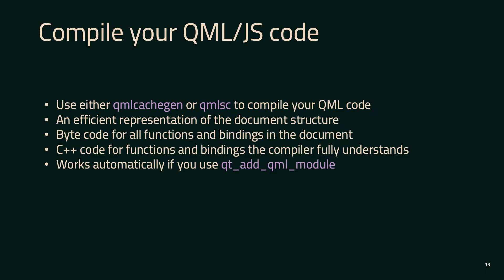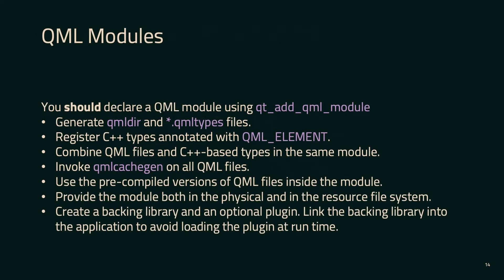The script compiler has more advanced functionality, but QML Cache Gen also does all of these things. Rather than a straight text document — a QML file is just a text file — it converts that to a binary representation, converting everything at least into bytecode. For the constructs we can actually understand, like functions and bindings written in JavaScript, those will be actually converted into C++ code, then compiled, linked, and put into your project. That is proper compiled code in the same way your regular C++ code is. And all of this works automatically without you doing anything if you're using the Qt add QML module function in CMake.